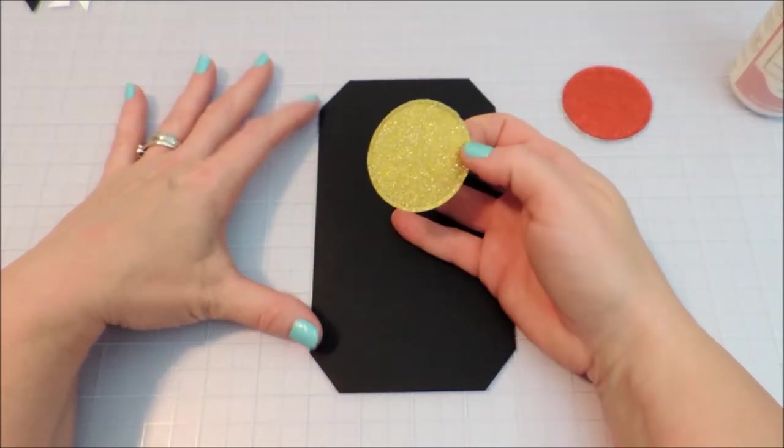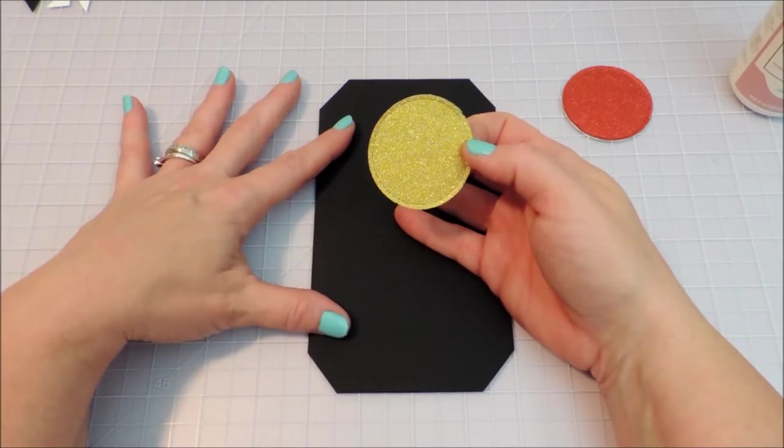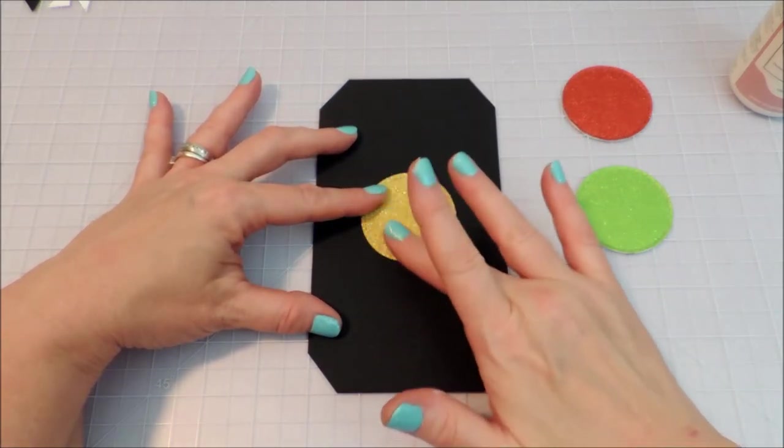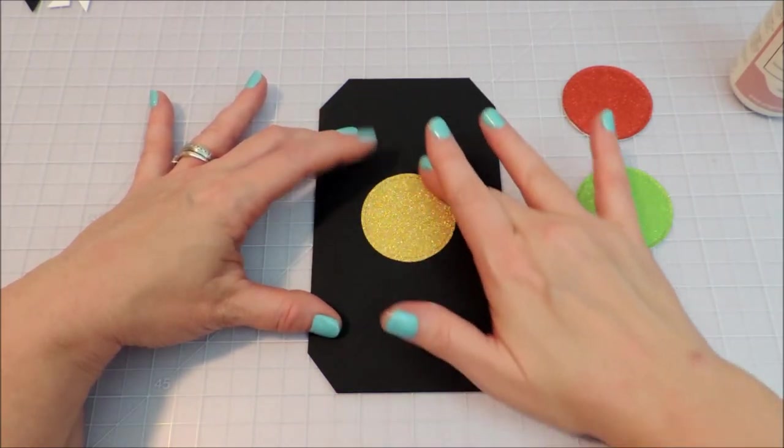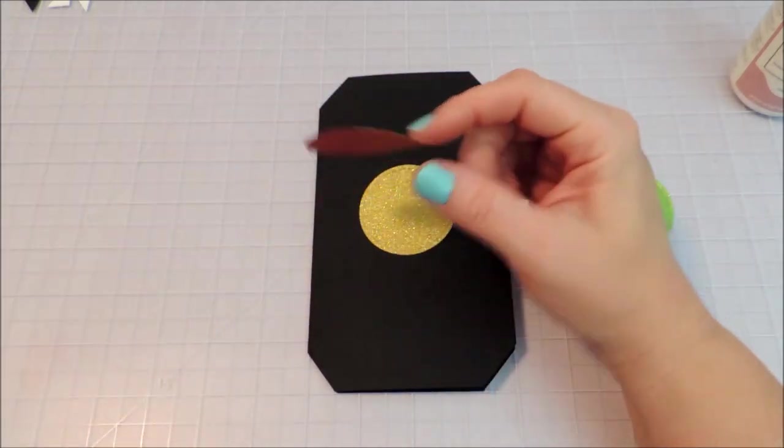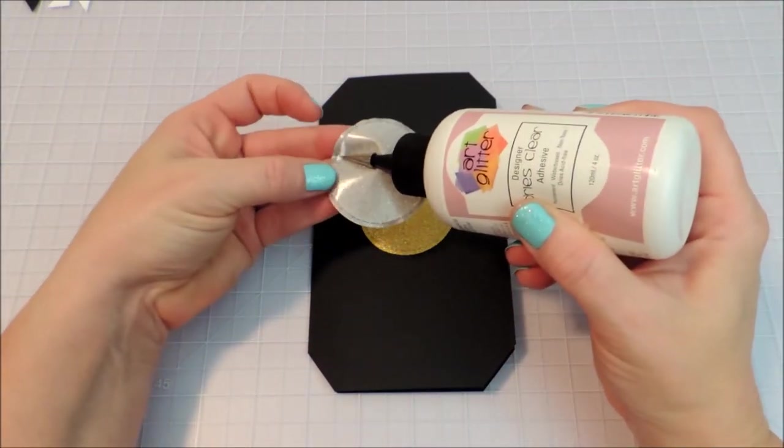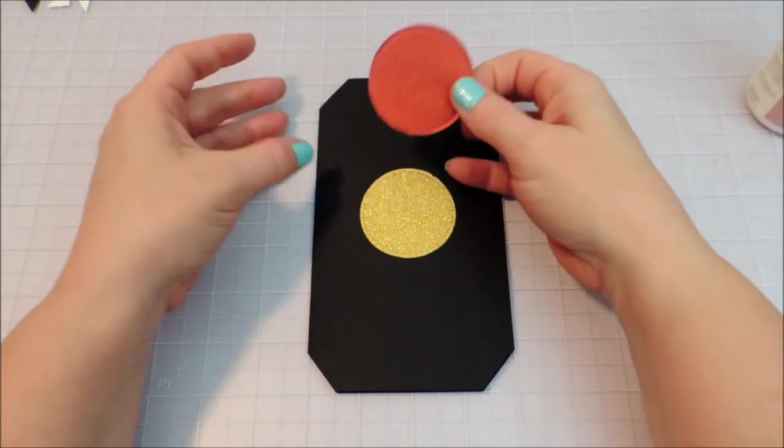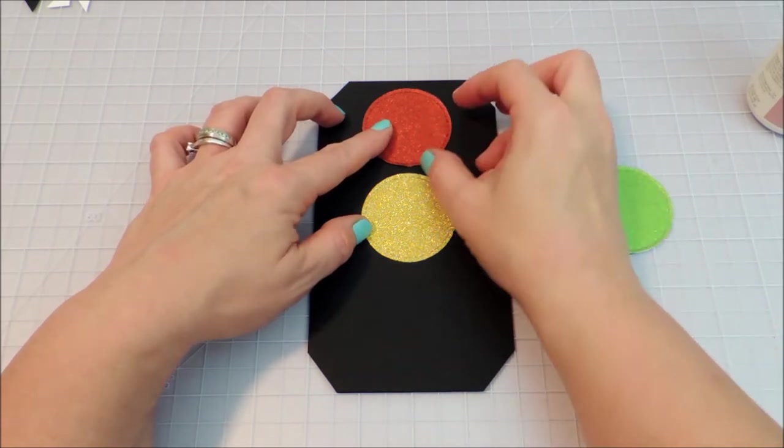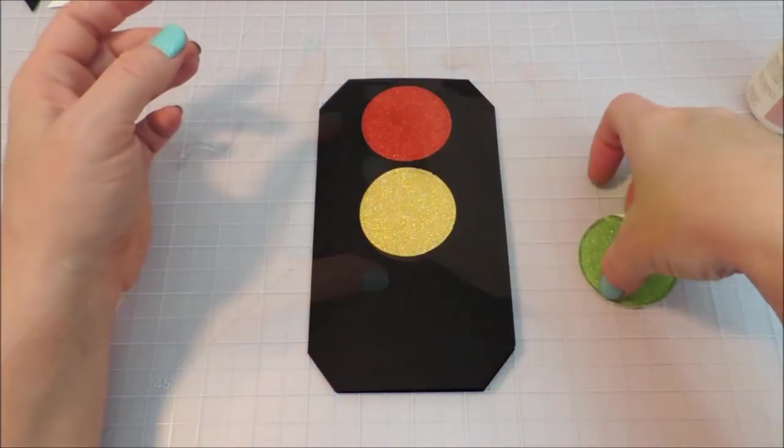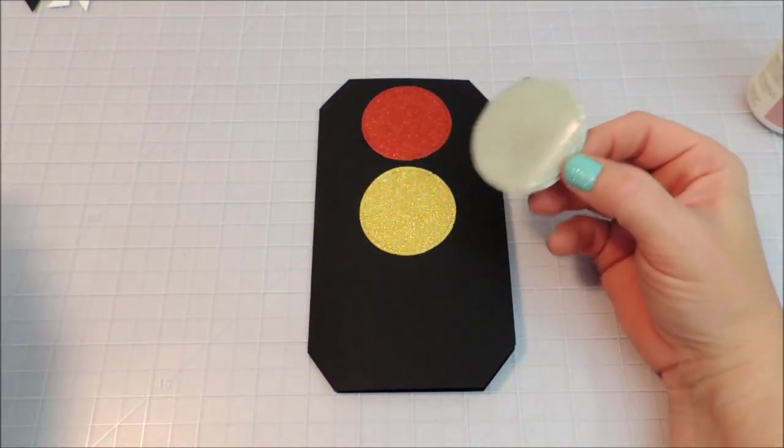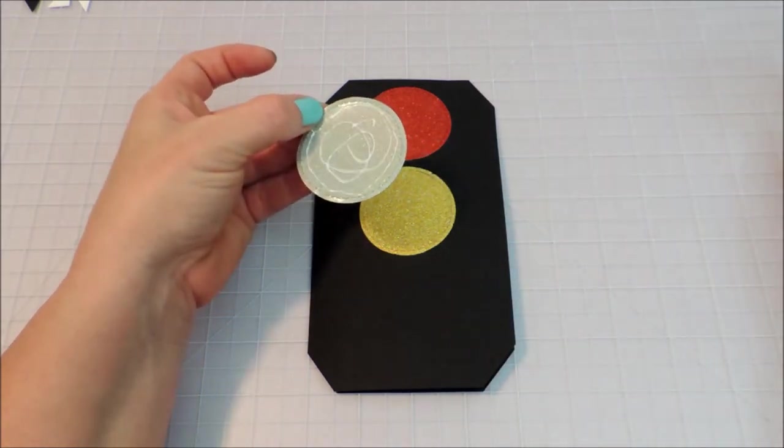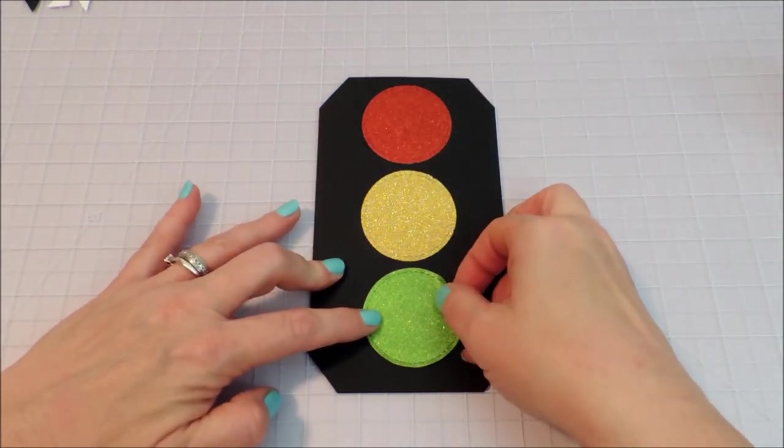And I'm going to line this up on my grid mat, so that I can get a good idea of where is center. And then just press it down. And with that one centered up, I can judge a little more easily how to place the top and bottom ones.